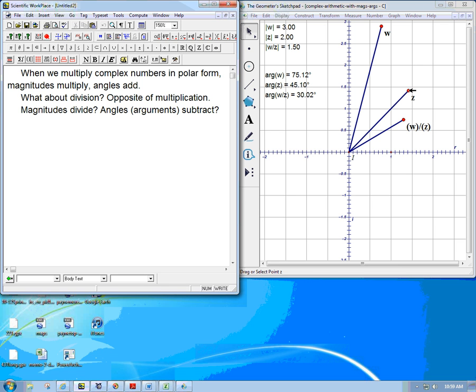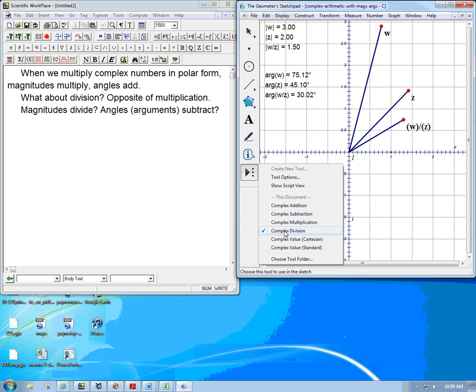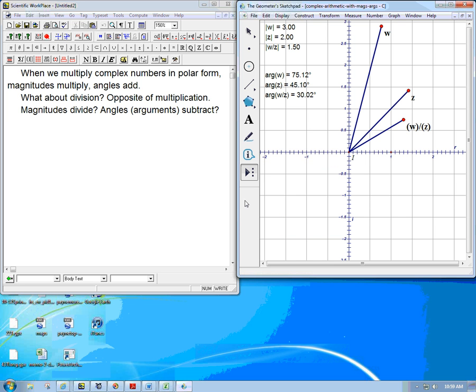So let's just look at, I've got a sketch here. I used the complex division tool to create, given two complex numbers w and z, to create w divided by z.